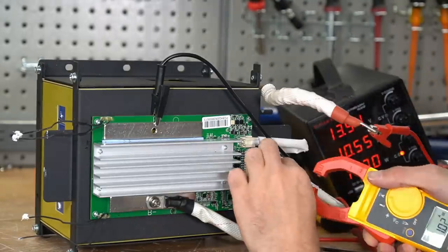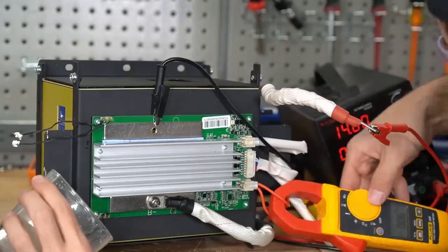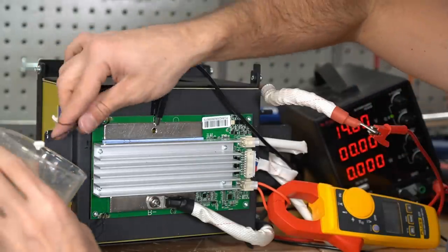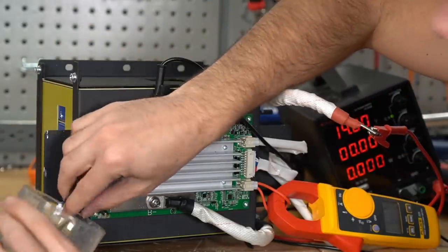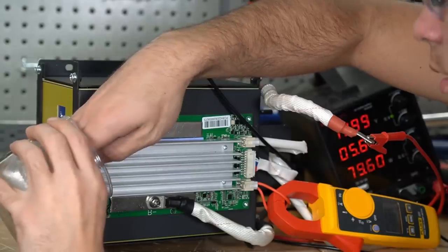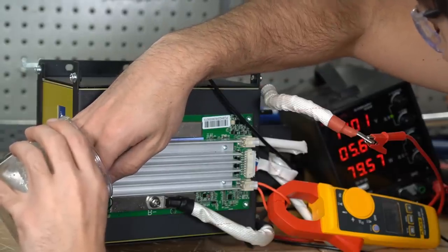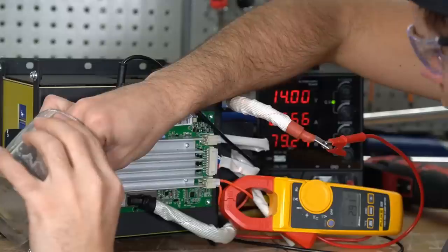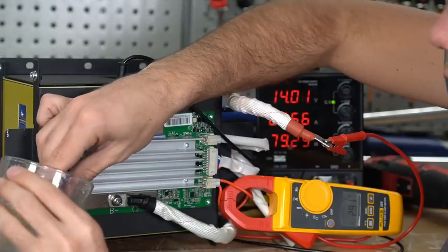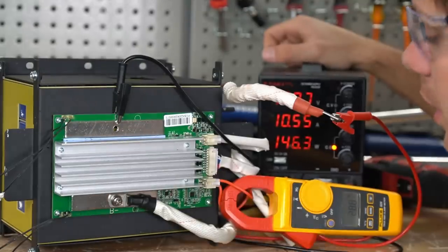We're gonna see how much current those little heaters use. I can't get the heaters to turn on. So weird - maybe all the temperature sensors have to be cold. Oh, there we go. It's triggered - 80 watts. It's about 40 watts per pad. That's pretty typical for this size of battery. Actually, it does work. That's cool.